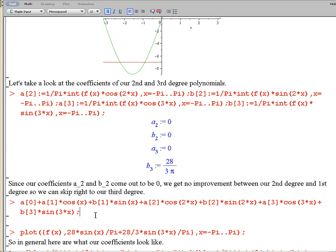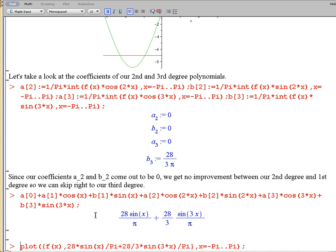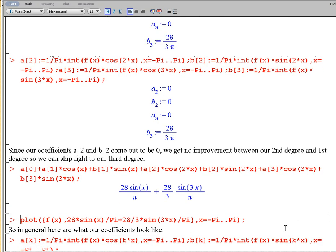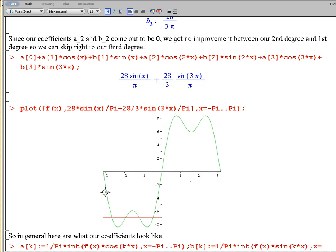Now this code here will set up our polynomial. So what we have here is a third degree Fourier polynomial. Let's take a look at the plot. We see that we start to get a better approximation of our behavior here, up where the lines for f of x are.